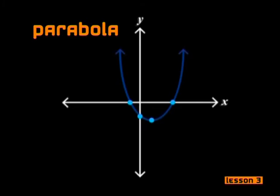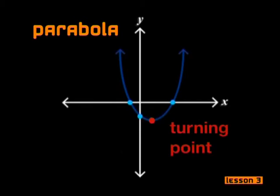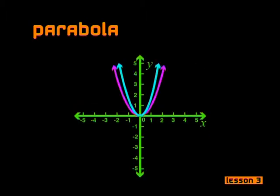Before we get started, let's quickly go over some terminology we're going to be using in this lesson. A parabola is the graph of a quadratic equation. The x-intercept is the point or points where the graph cuts the x-axis. The y-intercept is the point where the graph cuts the y-axis. The turning point or stationary point is the point where the graph stops briefly before changing direction. These graphs can vary in shape — some are smiling graphs and others are frowning graphs; some are narrow and some are much wider.